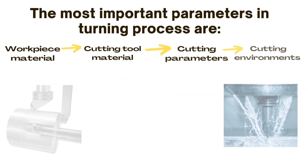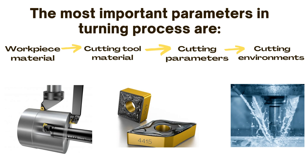The most important cutting parameters used in the turning process are workpiece material, cutting tool material, machining parameters, and cutting environments.